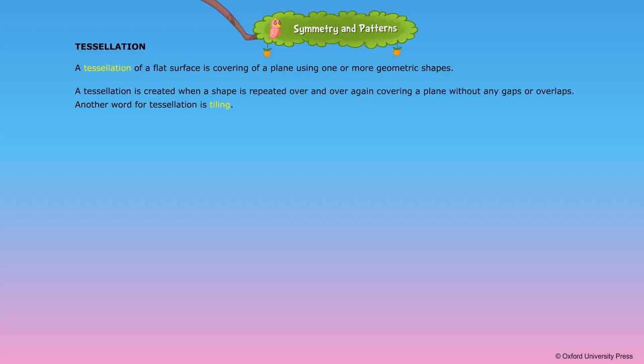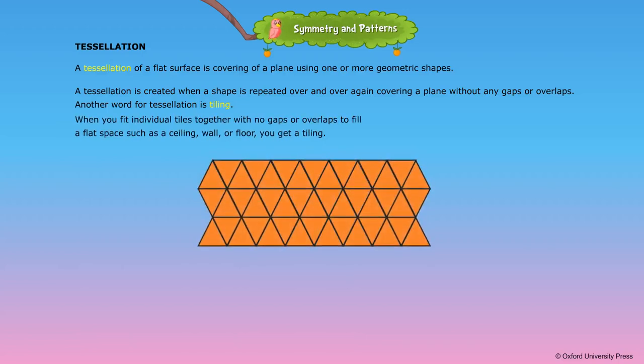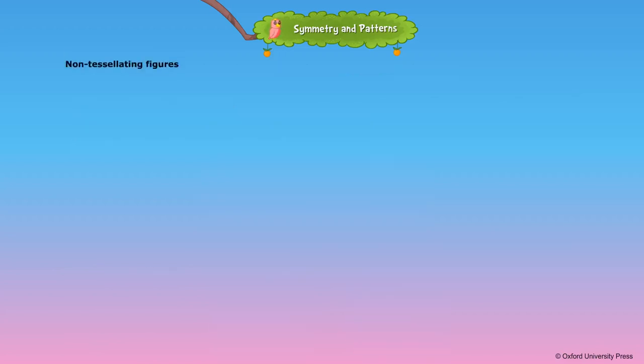Another word for tessellation is tiling. When you fit individual tiles together with no gaps or overlaps to fill a flat space such as a ceiling, wall or floor, you get a tiling. A regular tessellation is a pattern made by repeating a particular shape.